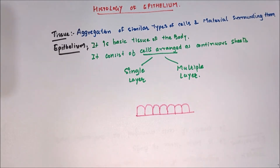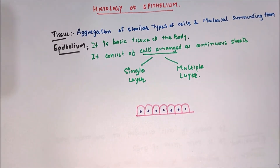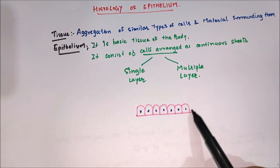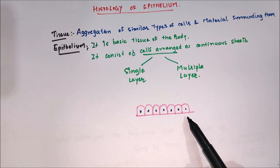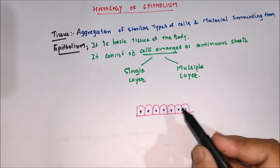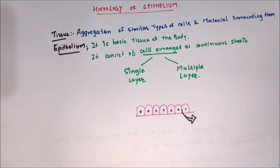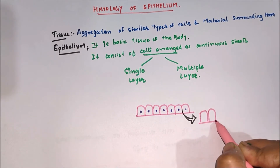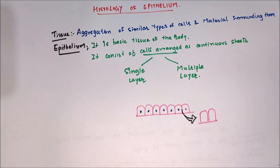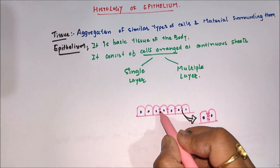This epithelium is formed by similar types of cells which are similar in size, shape, and function. These are the nuclei of the epithelium. The cells which form the epithelium have two lateral surfaces as well as a free surface and a basal surface. The cells forming the epithelium are closely opposed to each other on their lateral surface, where they are tightly connected with each other by cell junctions.